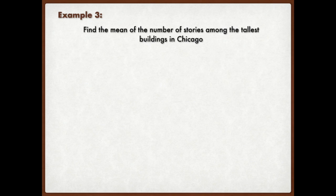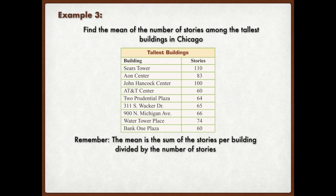Let's go ahead and do some practice problems. Find the mean of the number of stories among the tallest buildings in Chicago. So here we have the tallest buildings in Chicago, giving us how many stories, how many floors are in each building. Now remember, the mean is the sum per building divided by the number. So I'm going to have you right now try and work out this practice problem. Go ahead, pause it. When you're done, you can press play. So we're going to add up all the stories, and that's 682 stories, and there are a total of nine buildings. So I'm going to divide nine into 682. That's going to give me my mean. Nine into 682 gives me 75.7, which is technically 76 stories. So 76 stories would be the mean.